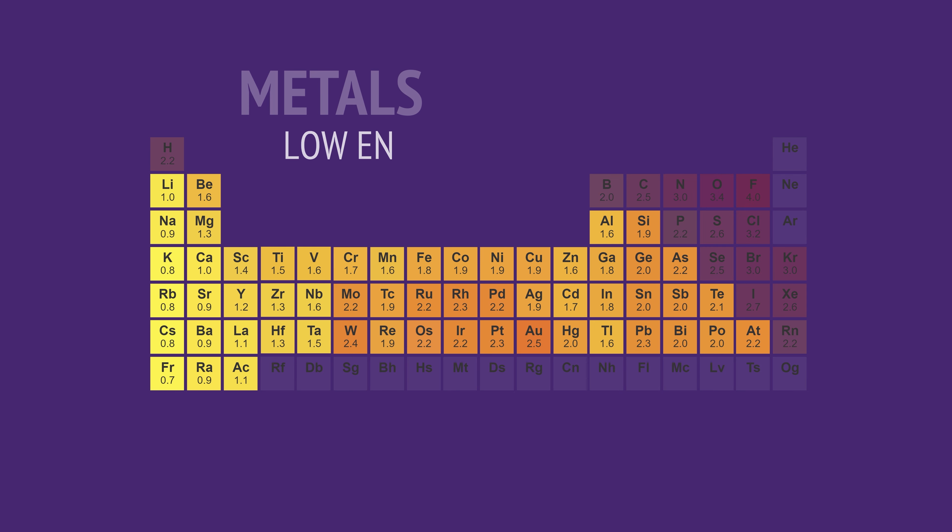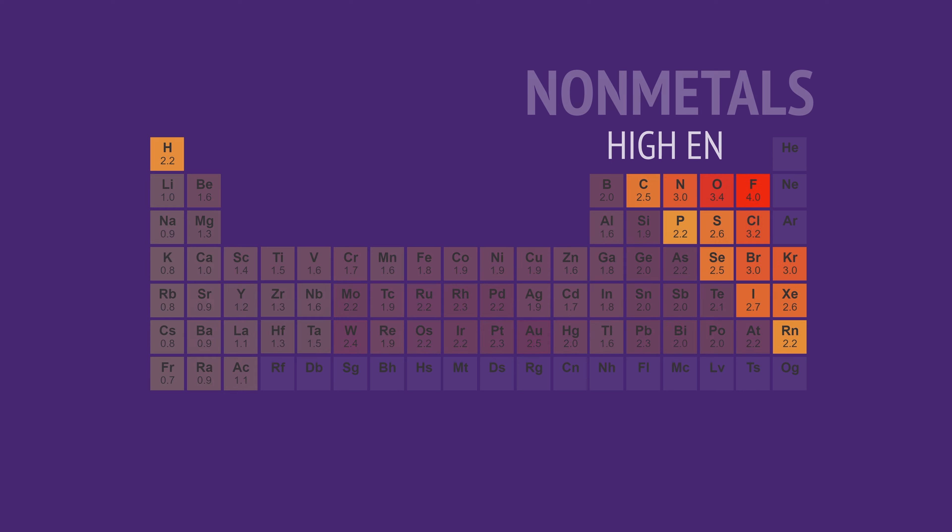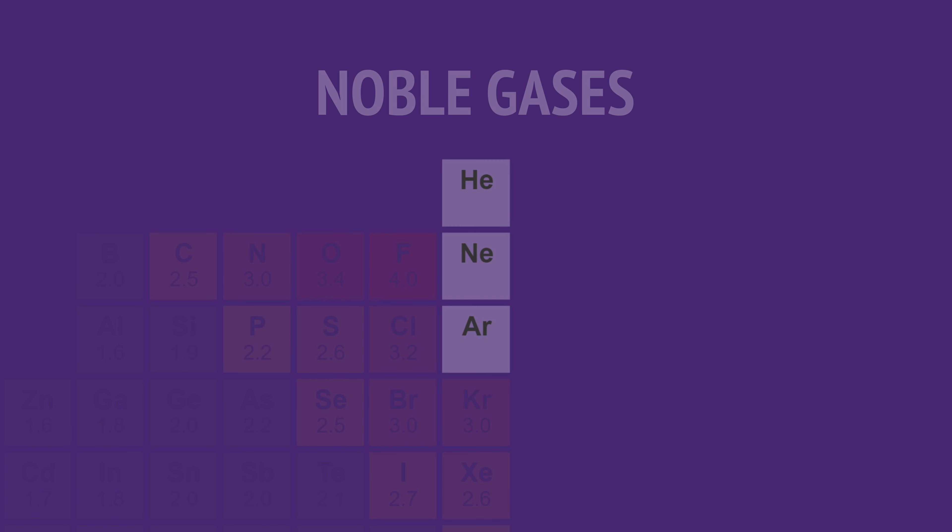Metals generally have low electronegativity values, which is why they tend to lose their outer electrons and form positive ions, while nonmetals generally have high electronegativity, which is why they tend to form negative ions. The noble gases, helium, neon and argon, do not form bonds with other atoms, as they have complete outer electron shells. With no attraction for electrons, they don't have an electronegativity value.